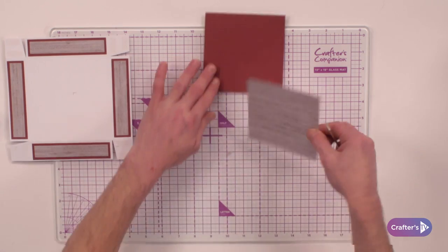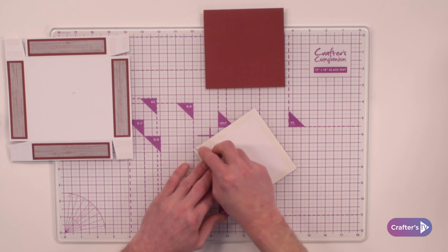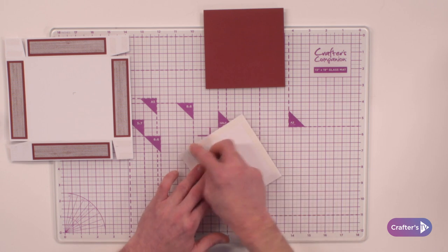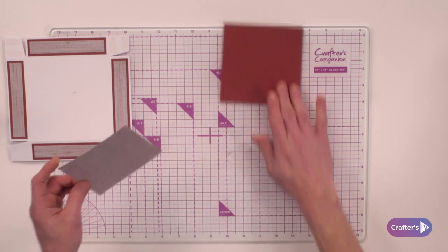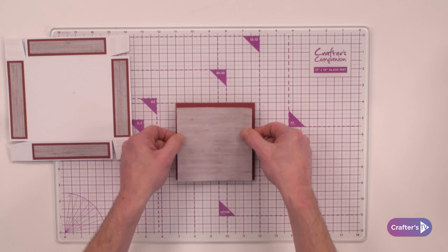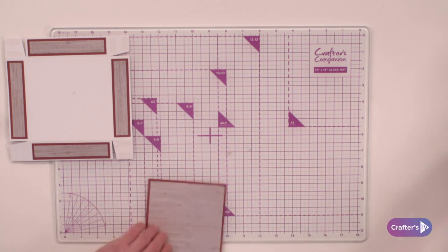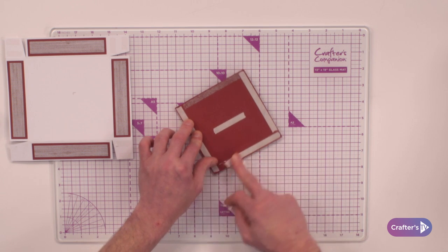And then before we assemble those panels, I've gone in with a square four and a half by four and a half, and I'm going to matt and layer that onto a piece of the texture cardstock that comes within subscription box number 48. So we can layer that one over the top into position here, and then this can go into the center of the box ready for us to construct the box.